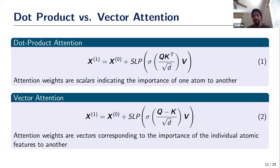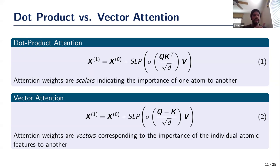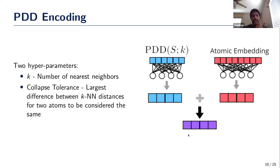We also use two different attention mechanisms. In dot product attention, the standard mechanism, attention weights are scalars indicating the importance of one set element to another. In vector attention, attention weights are vectors, indicating importance at the individual feature level — each feature has an attention weight assigned for each other element in the set. Vector attention is more granular than dot product attention.